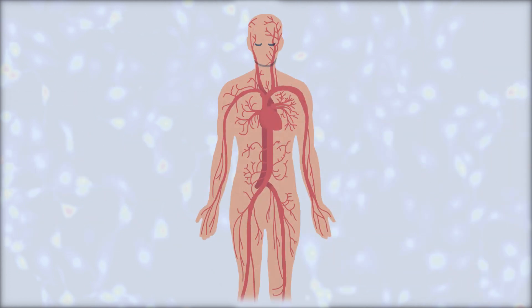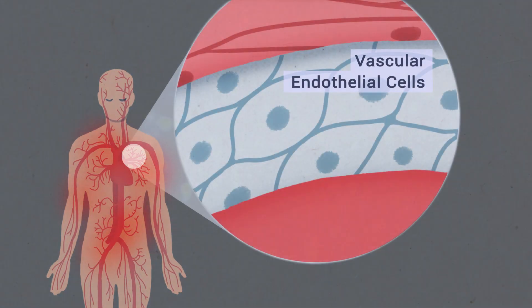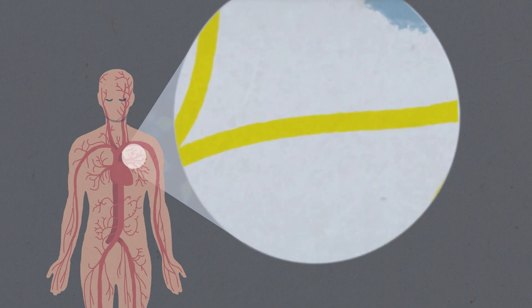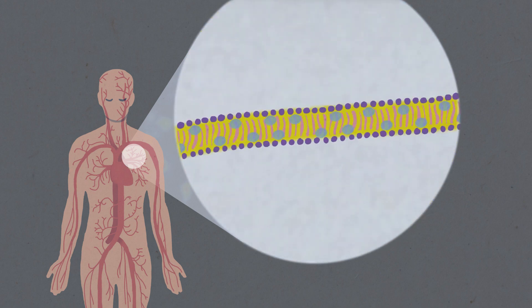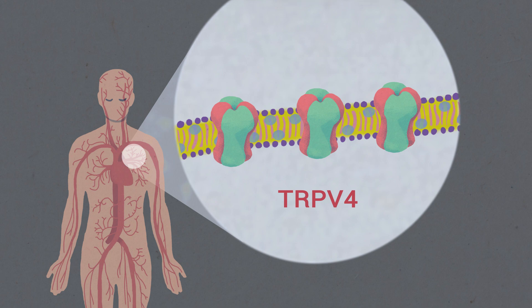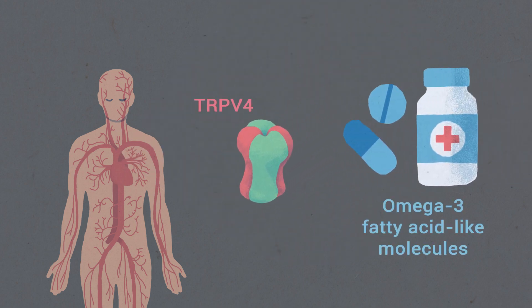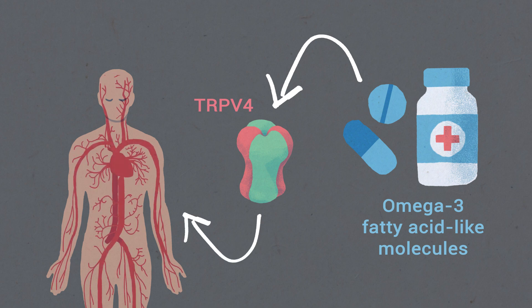Together, our findings provide a molecular framework for understanding the effects of omega-3 fatty acids in human vascular endothelial cells. They could modulate endothelial cell reactivity by altering membrane physical properties, which in turn governs the number of TRPV4 channels available for activation and decreasing calcium-dependent desensitization. Omega-3 fatty acid-like molecules might be viable antihypertensive agents for targeting TRPV4 to reduce systemic blood pressure.